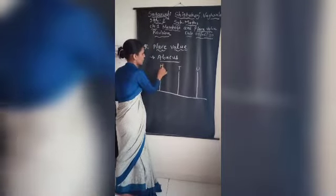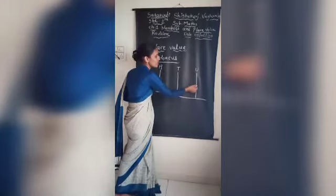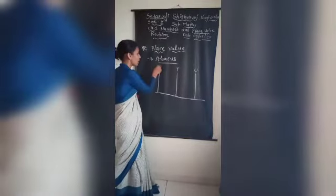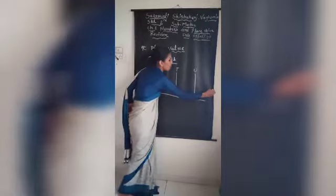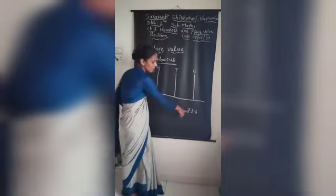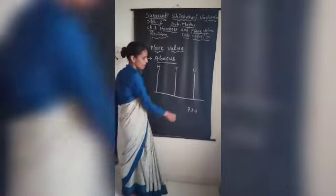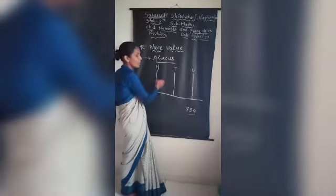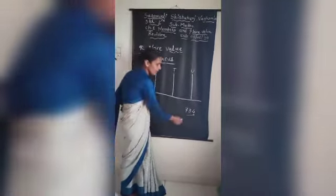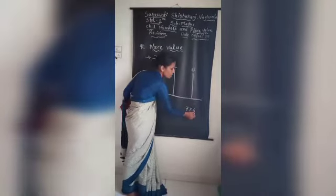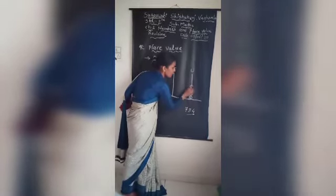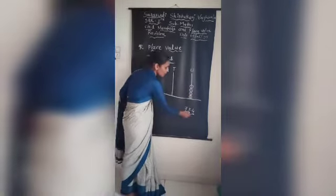In first standard you already learned units and tens. Now in second standard we also learn about the hundreds place value. I want to write one number here — it is 734. Now I want to write this number on the Abacus. We start from the unit place value, so here is a 4 in the units place. We draw four beads — because the number in the units place is 4.